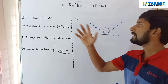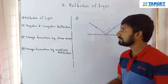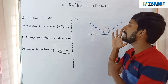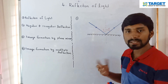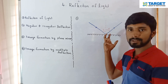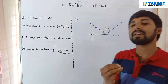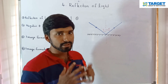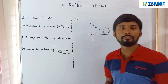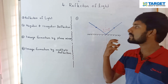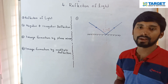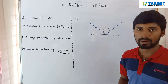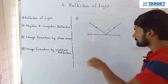In reflection of light, a light ray hits a smooth surface and is sent back into the same medium. That is reflection of light. When light is reflected, there are certain laws that are obeyed. Reflection is the phenomenon of sending back a light ray into the same medium when it is incident on a smooth surface, by obeying certain laws.